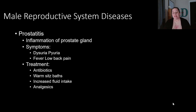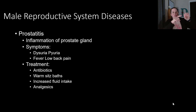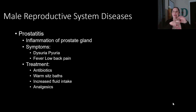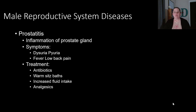Looking at male reproductive system diseases, the first is prostatitis — inflammation of the prostate. The prostate gland surrounds the urethra like a donut, so if it becomes inflamed and swollen, it can put pressure on the urethra and kink it up, causing many of the common symptoms.